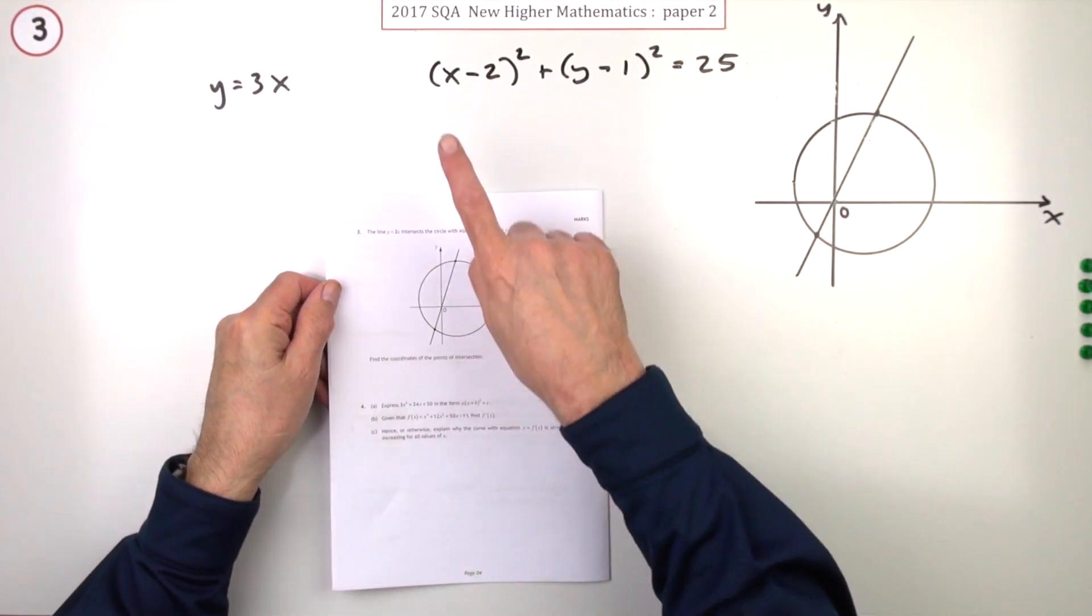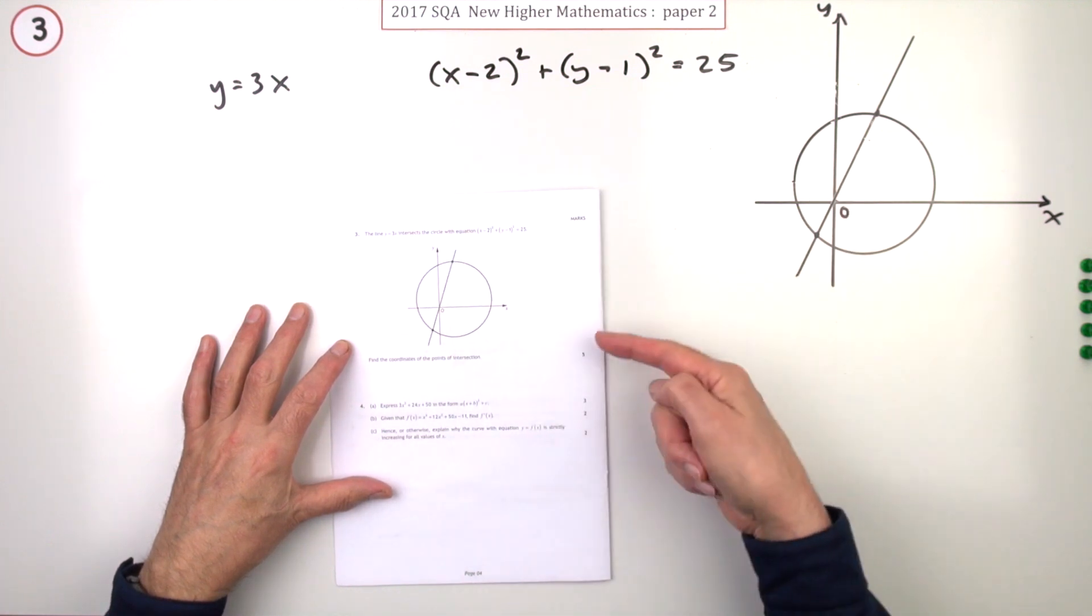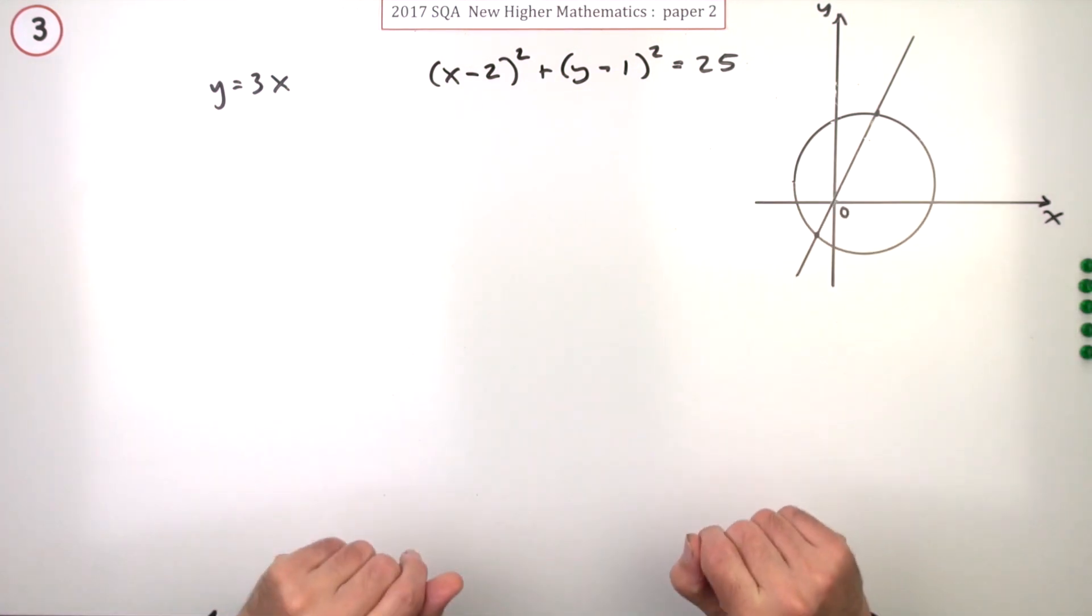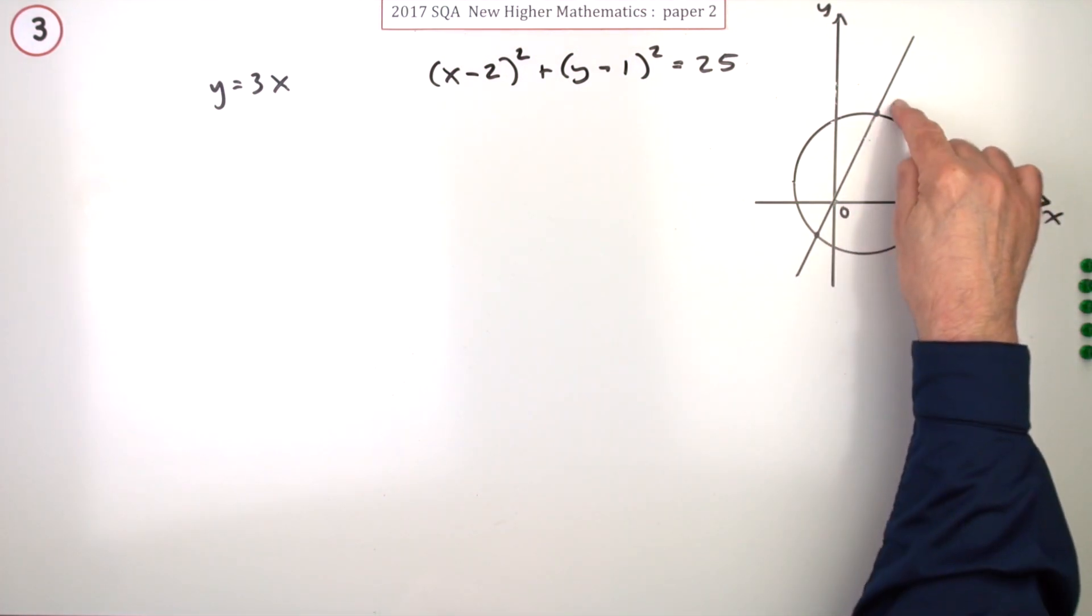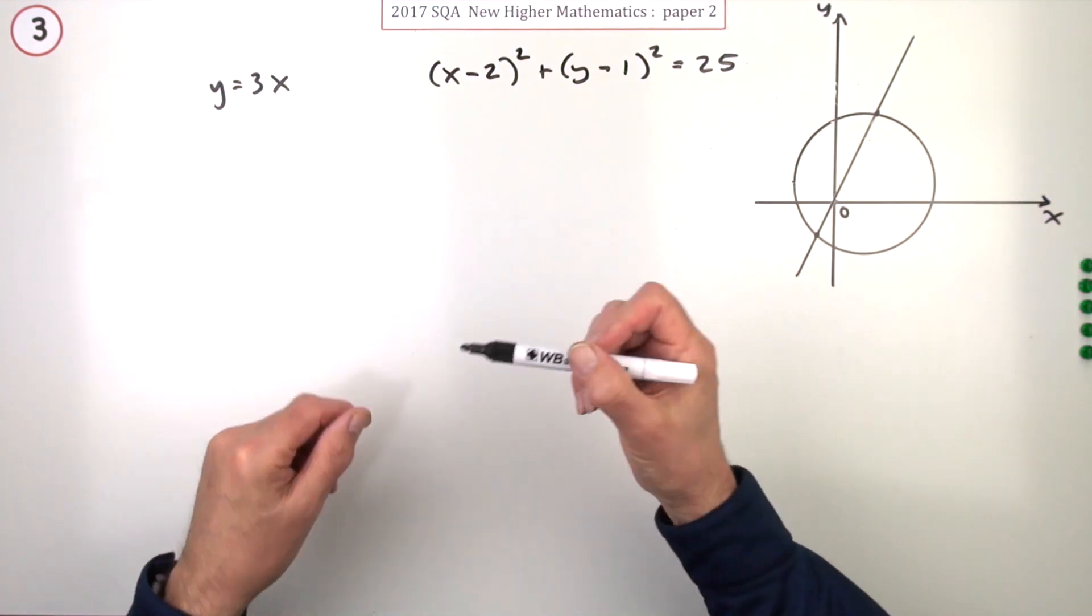Number three from paper two of the 2017 New Higher Maths. We have the intersection of a line with a circle, worth five marks. The diagram shows that of the two solutions, one is positive-positive and one is negative-negative, which helps check if your solution's on the right track.